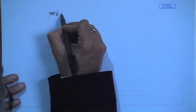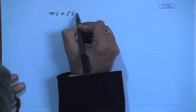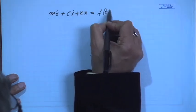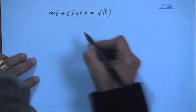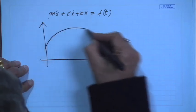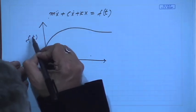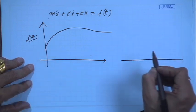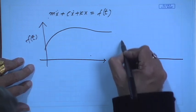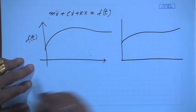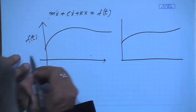Let us go back to our equation: m x-double-dot plus c x-dot plus k x equals f of t, where f of t is the applied load. Let us suppose it looks something like this — this is my f of t. The basic idea — I am going to draw two very similar things, because I am also going to answer questions about the other methods. Even though they do not look the same, they are the same.